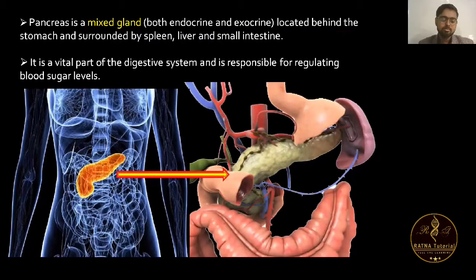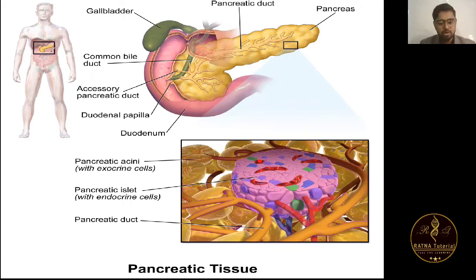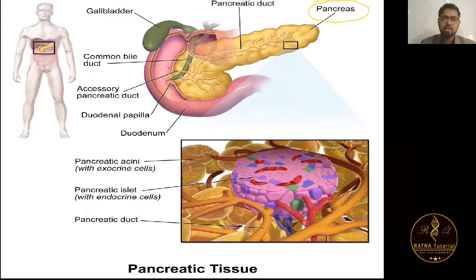This is a diagram of pancreas. Basically, pancreas location is now clear. The pancreas looks like a leaf-like structure. Above it is a green colored bag-like structure called the gall bladder.